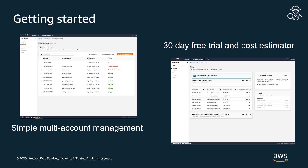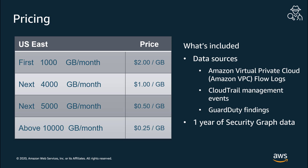Each account receives a free 30-day trial the first time they're added as a Detective member in a region, and we provide a usage page that you can use to get an estimate of the cost for all of your accounts. Detective has a tiered pricing model based upon the volume of data that the service ingests. The summaries and analytics of the ingested data are kept for one year. For example, Detective's cost for ingesting two terabytes of data per month is $3,000 for the month.